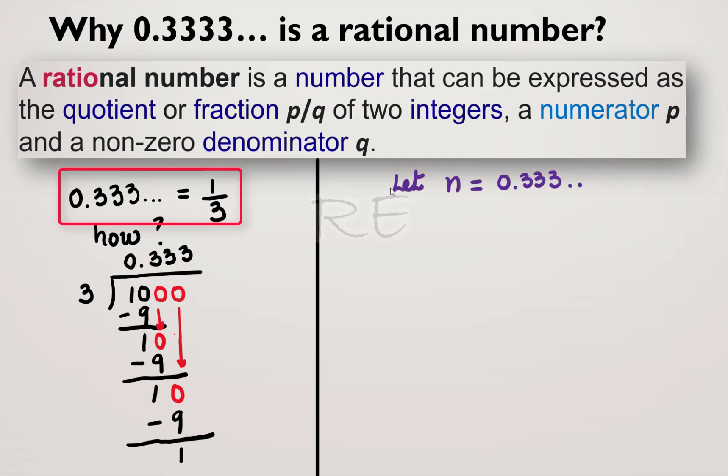let a number n equal to 0.333. The cycle is a one-digit cycle, 3, 3, 3. So if we multiply n by 10, then we will have 10n equal to 3.333.